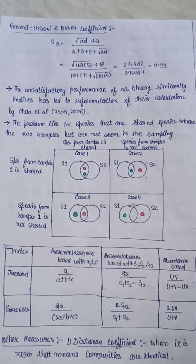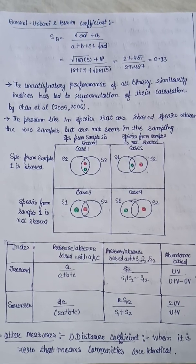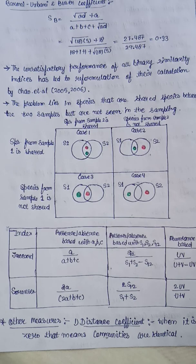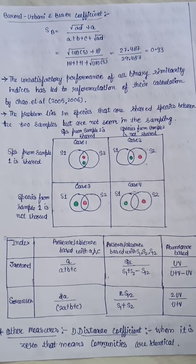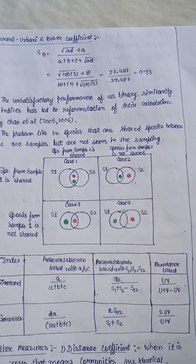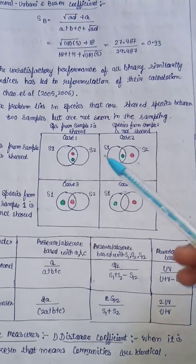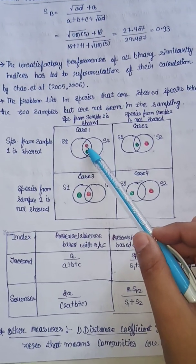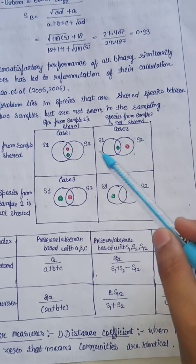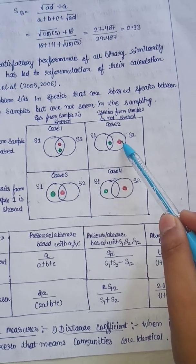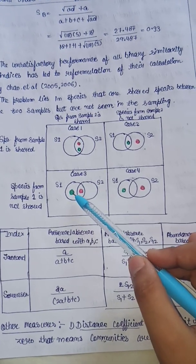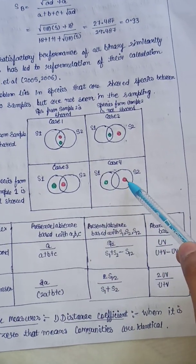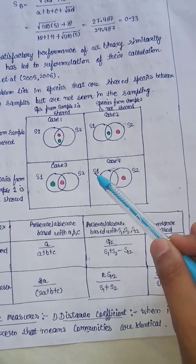There is a problem: the unsatisfactory performance of binary similarity indices led to their reformulation by Chao et al. in 2005 and 2006. The problem lies in species that are shared between two samples but are not seen during sampling. Consider a diagram: in case one, a species from sample one is shared; in case two, a species from sample two is not shared; in case three, the species resides only in sample one; in case four, both species reside in their own separate areas.